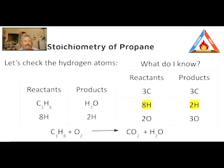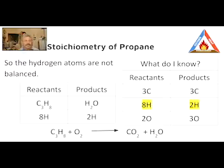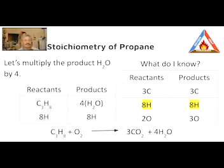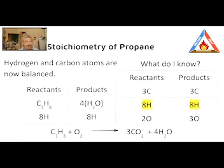Now I have eight hydrogens within the propane on the reactant side and only two within the water molecule on the product side. So the hydrogen atoms are not balanced. How will I balance this? What would you do? Let's multiply the product water by four. Four times two is eight. That gives me eight hydrogen atoms on the product side and eight hydrogen atoms on the reactant side. Now I have my hydrogen atoms and my carbon atoms balanced. That leaves just oxygen to balance.